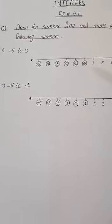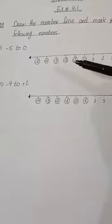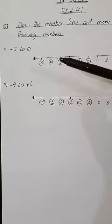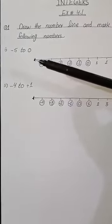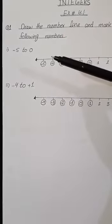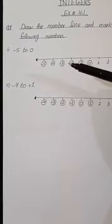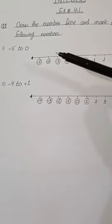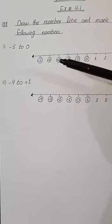As we move to the right side further, the value increases, and if we move to the left side further, the value decreases. Let's start the question. Our question is: draw the number line and mark the following numbers from minus 5 to 0. In this, we have to circle or mark the numbers from minus 5 to 0. For this purpose, first of all, we have to draw the number line with the help of a scale. According to the question, we just mark only those numbers which are demanded: minus 5 to 0.